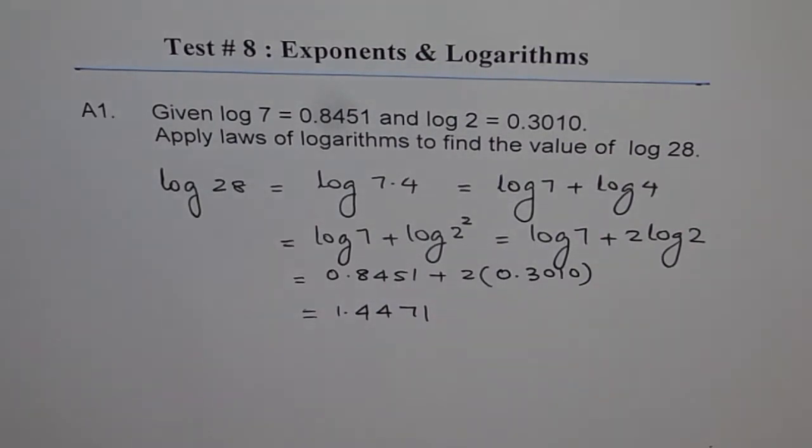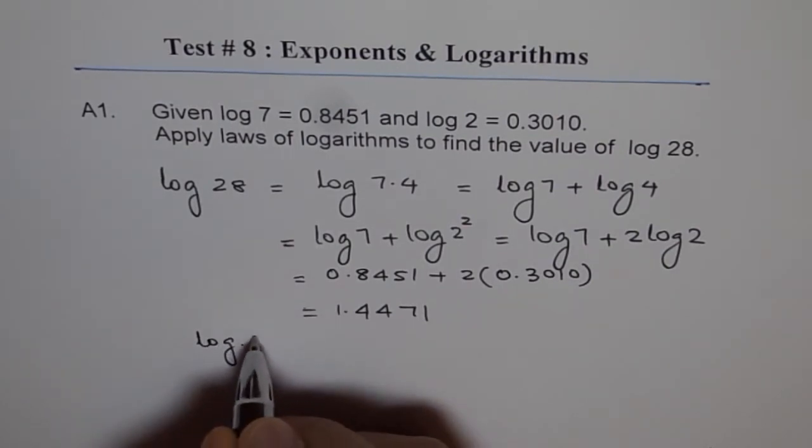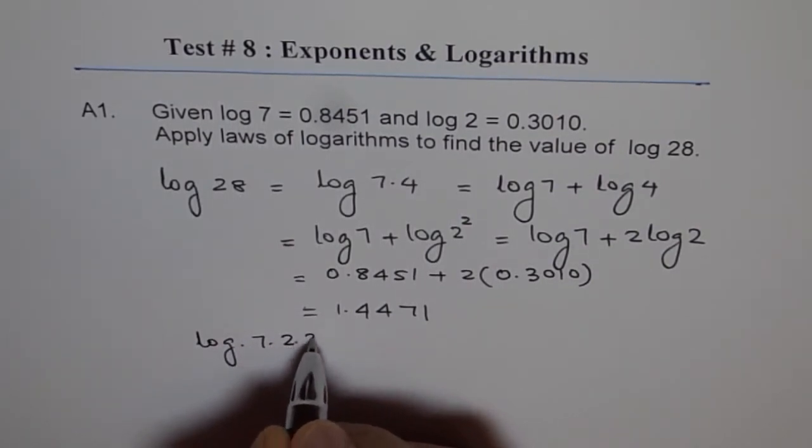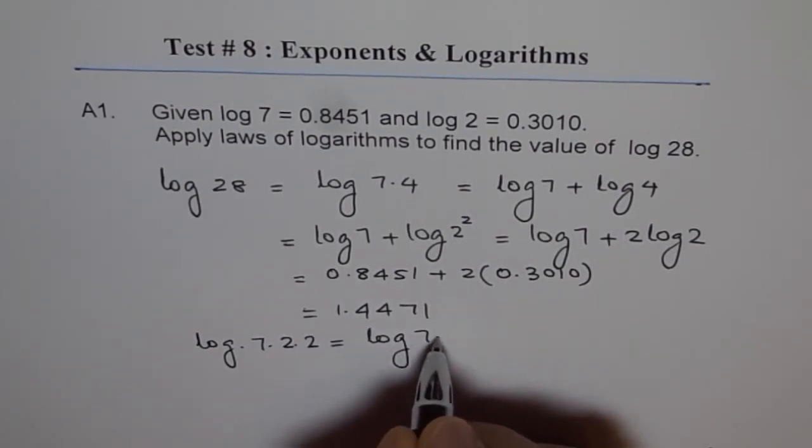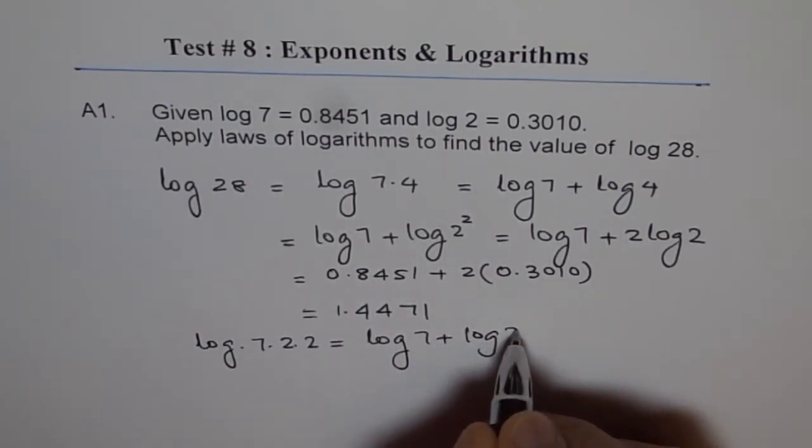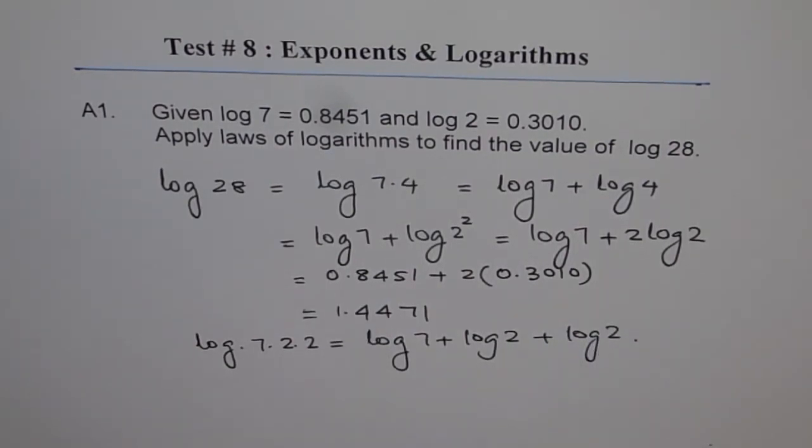That's one way of doing the same thing. You could have written this as log of 7 times 2 times 2. In that case, you could write log 7 plus log 2 plus log 2, thereby getting the same result. That could be an alternate way of doing it. Thank you.